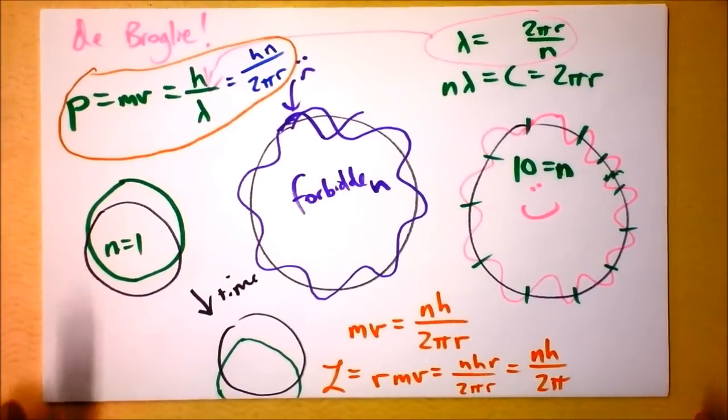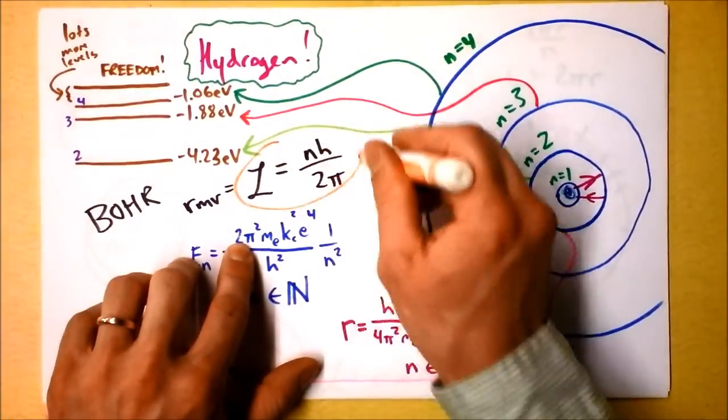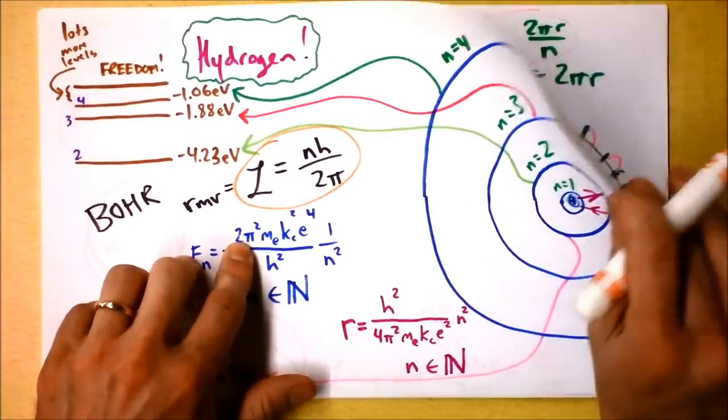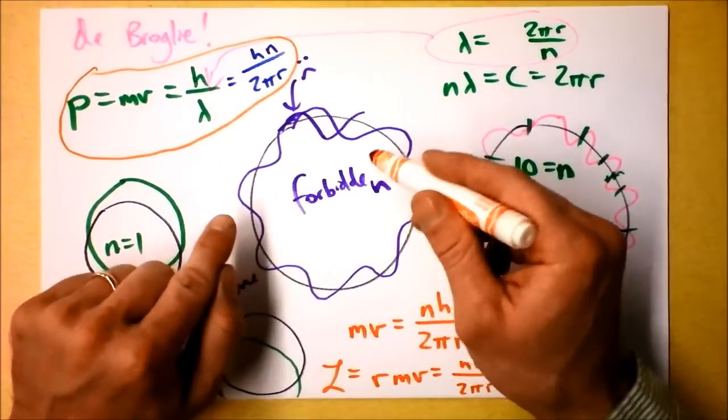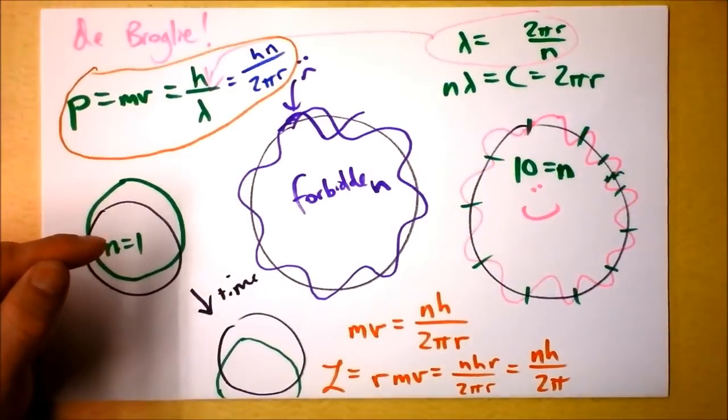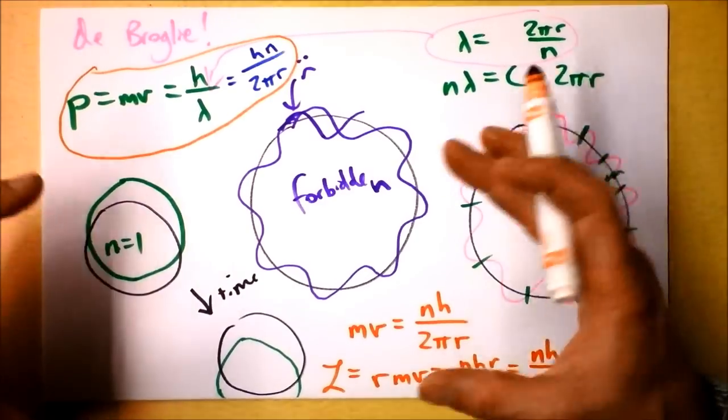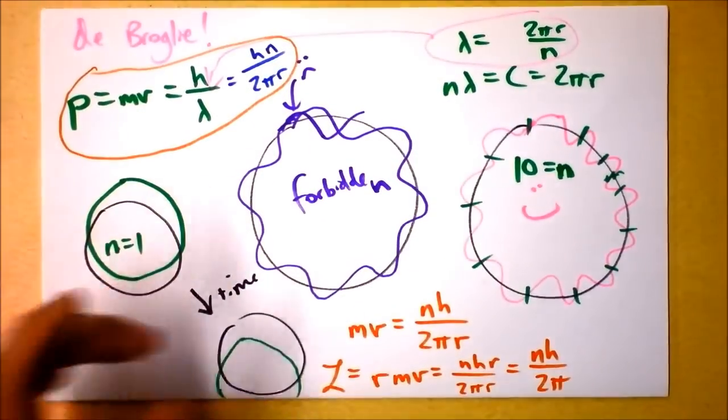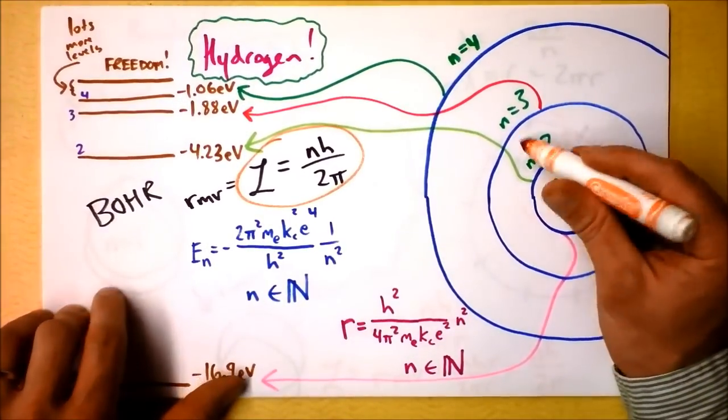Dang! We have justification for Bohr's incredible statement that the angular momentum had to be that value right there. Look at that. That is the same value. N h over 2 pi is the angular momentum if the electron doesn't interfere with itself. So the wave function of the electron can only exist at certain radii. That's the acceptable ratio of these radii right here.